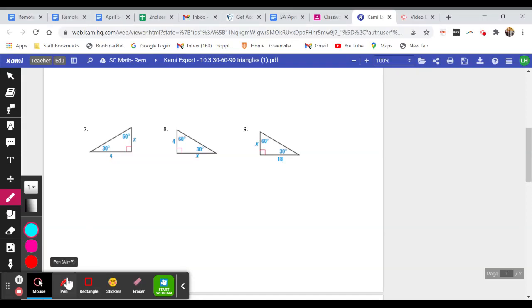Question number seven. For question number seven, you are given the side directly across from the 60 degree angle, which is four. And now here we're used to seeing a number times root three. So that means we have to do a little bit of work to figure out the rest of our answers.